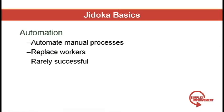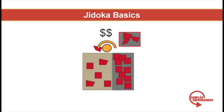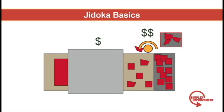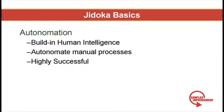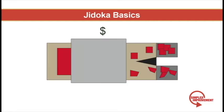So back to automation versus autonomation. The primary goal of automation is to replace workers. Unfortunately, automating a process is rarely successful. This is because automating operations that a human used to perform often still require the machine to be monitored. So as the process took an operator before, it now takes a machine and an operator — the cost model is higher with automation. In contrast, autonomation builds human intelligence into the machine so an operator is no longer needed. As you can see, this model is cheaper than both the original manual process and the automated process.